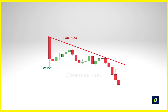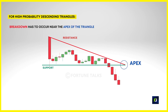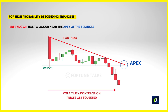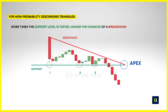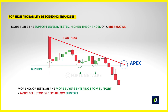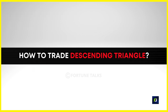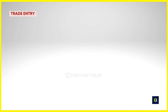For the highest probability breakout trades, the breakdown should occur near the apex of the descending triangle — where both trendlines meet and volatility is lowest. When volatility decreases, price is likely to explode out of the triangle. The more times the support level is tested, the better, because it attracts more buyers and increases the cluster of stop loss orders below the support level. When the price breaks below the support, these sell stop loss orders trigger, increasing selling pressure downward. For entry timing, since price falls faster than it rises, waiting for the breakout candle to close below support may leave you chasing the market — so a limit sell order as the price just breaks below support is preferred.